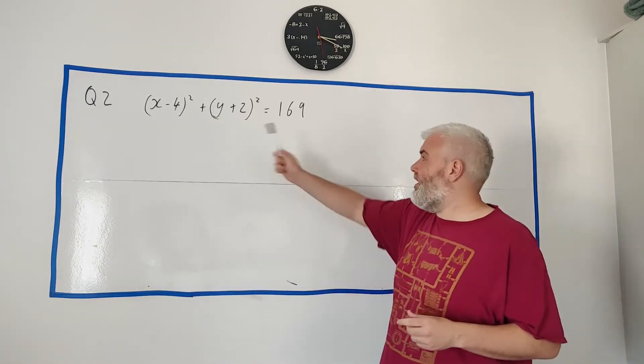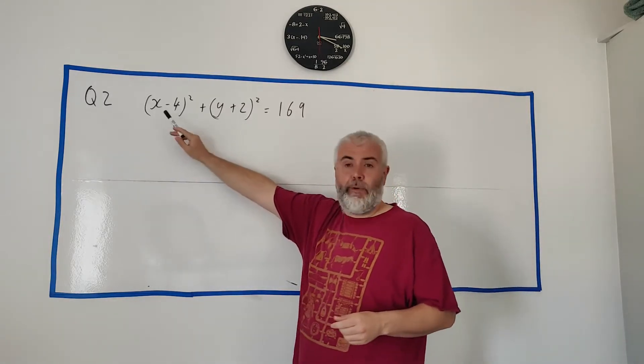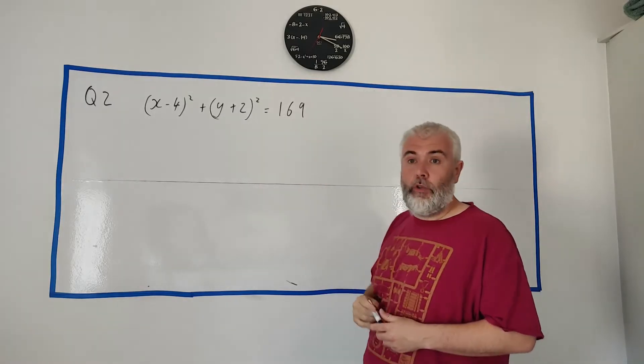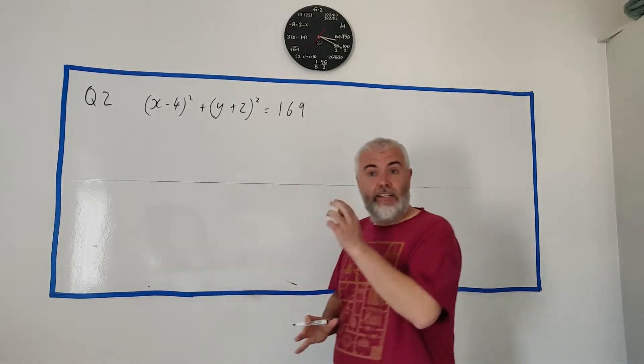For part A they give us this equation of a circle: (x - 4)² + (y + 2)² = 169. And they simply ask us to find the center.